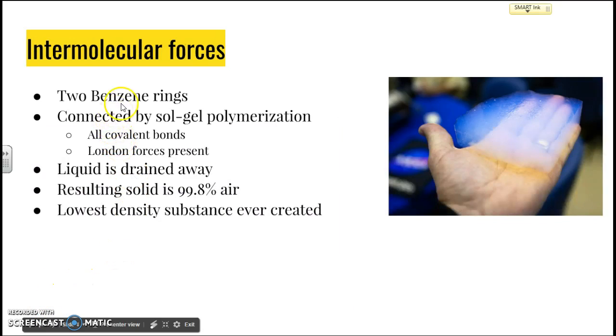So it's basically two benzene rings connected by sol-gel polymerization. Now what that basically means is if you picture a bunch of spaghetti strands, a polymer is just a giant strand of them. And what happens with polymerization is we're causing cross-linking. So you're having the spaghetti strands connected both vertically and horizontally, producing this basically 2D or 3D structure, and we can see this right in the hand.